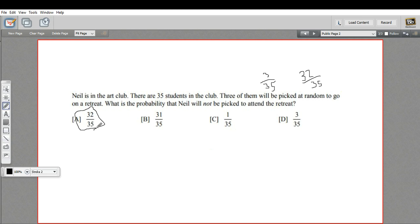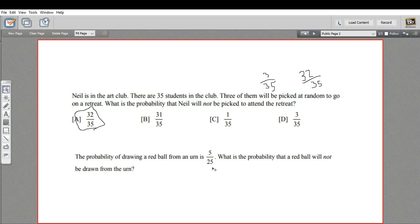Let's try one more like this. This one says the probability of drawing a red ball from an urn is 5 out of 25. What's the probability that a red ball will not be drawn? So we want the complement of this. I'm just going to take 25 minus 5. That's 20 chances of a